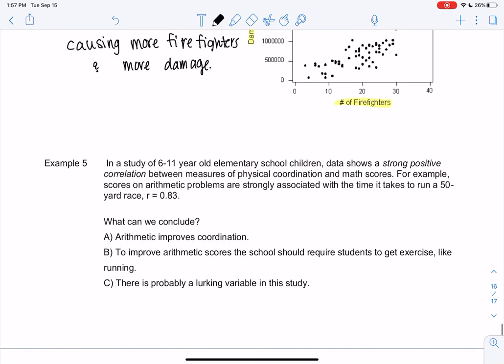And our final example for the chapter. We have a study of 6 to 11-year-old elementary kids. And we find that there's a strong positive correlation between physical coordination and math scores. So if we were to look at a graph, here's physical coordination, like maybe that's PE and math. And we draw this. It's going up. Maybe it's not a perfect line, but as PE scores go up, math scores go up. Coordination gets better. Math gets better.